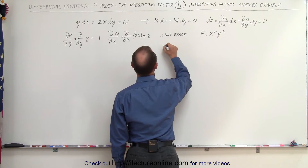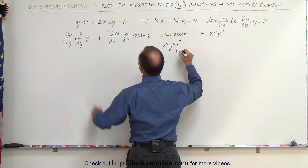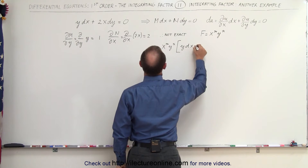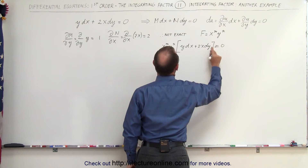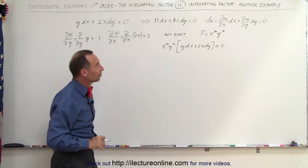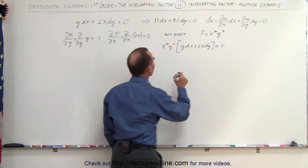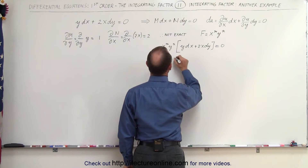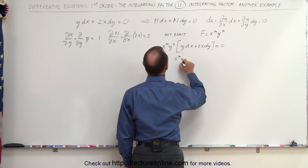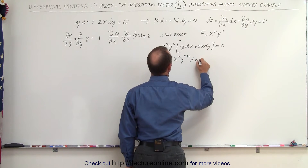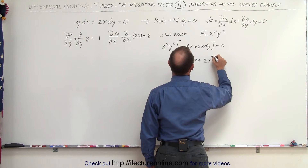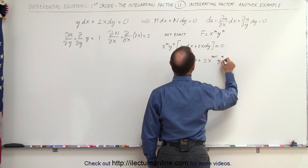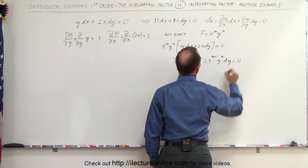So we have x^m times y^n multiplied by y dx plus 2x dy, which still equals 0 since multiplying 0 by anything gives 0. This becomes x^m · y^(n+1) dx plus 2 · x^(m+1) · y^n dy equals 0.